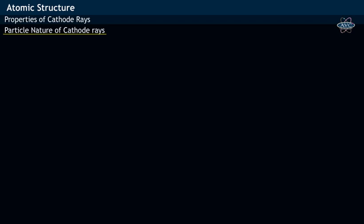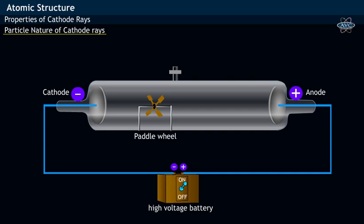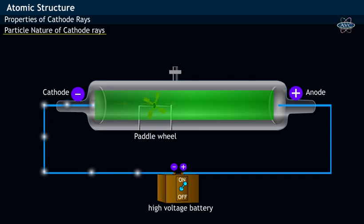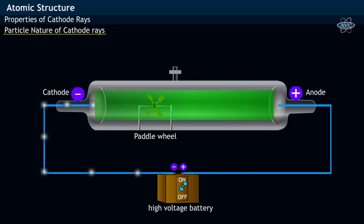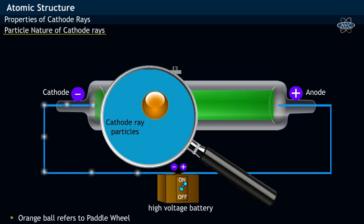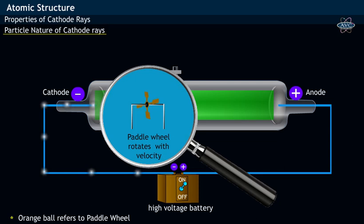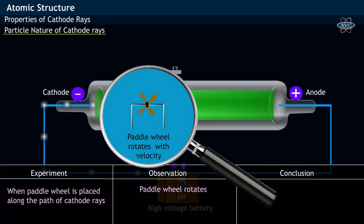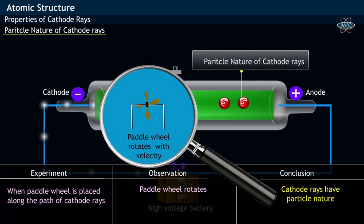Cathode rays and particle nature. A paddle wheel is placed along the path of cathode rays in a cathode ray discharge tube. As the cathode rays pass through the paddle wheel, the paddle wheel begins to rotate. This indicates that cathode rays have particle nature with a specific mass. Cathode ray particles on collision with the solid paddle wheel transfer momentum as well as energy, thereby making the paddle wheel move with a particular velocity. This experiment confirms the particle nature of cathode rays.